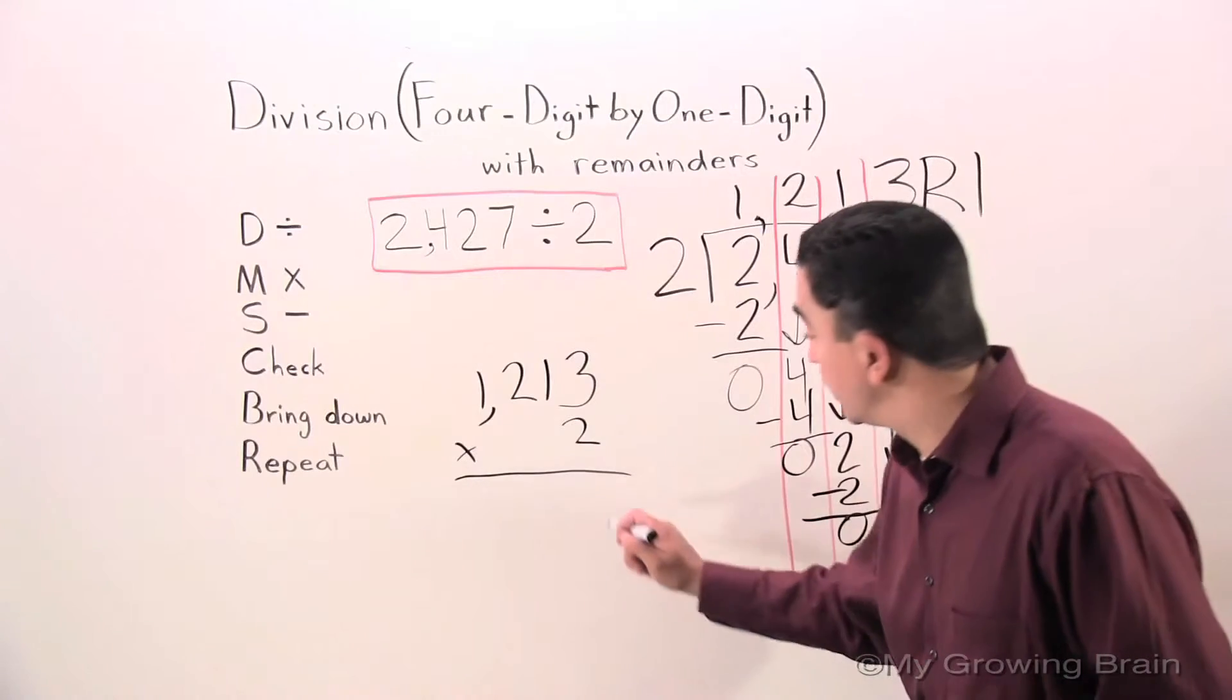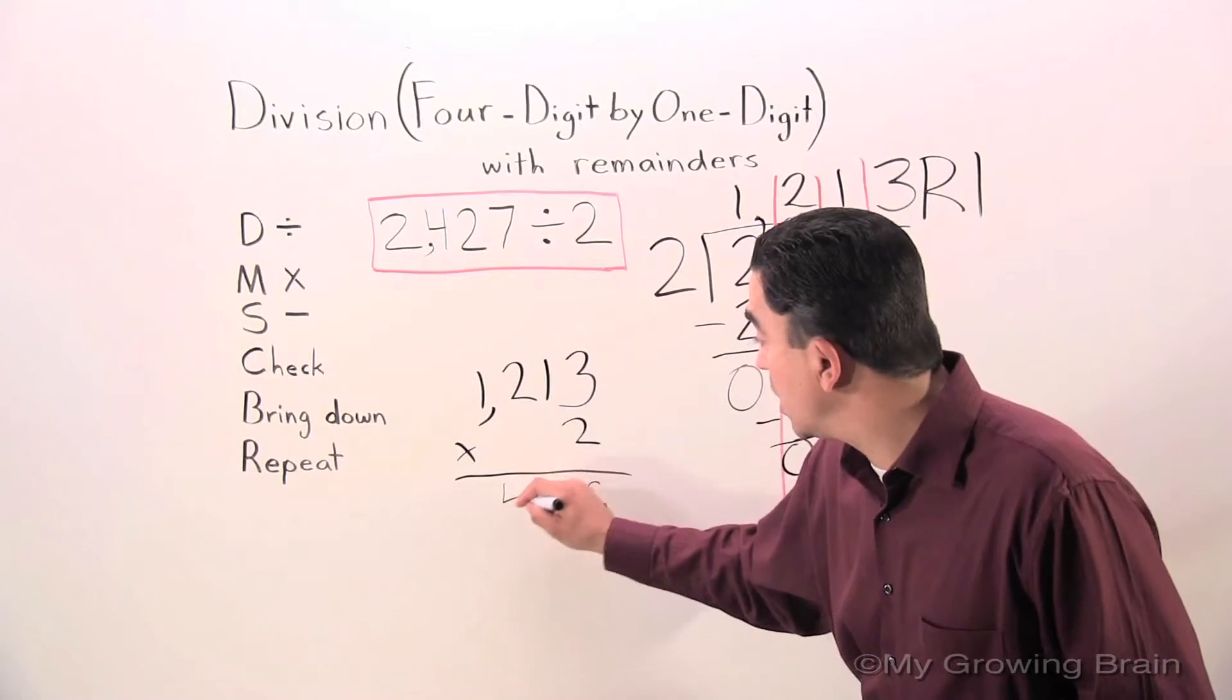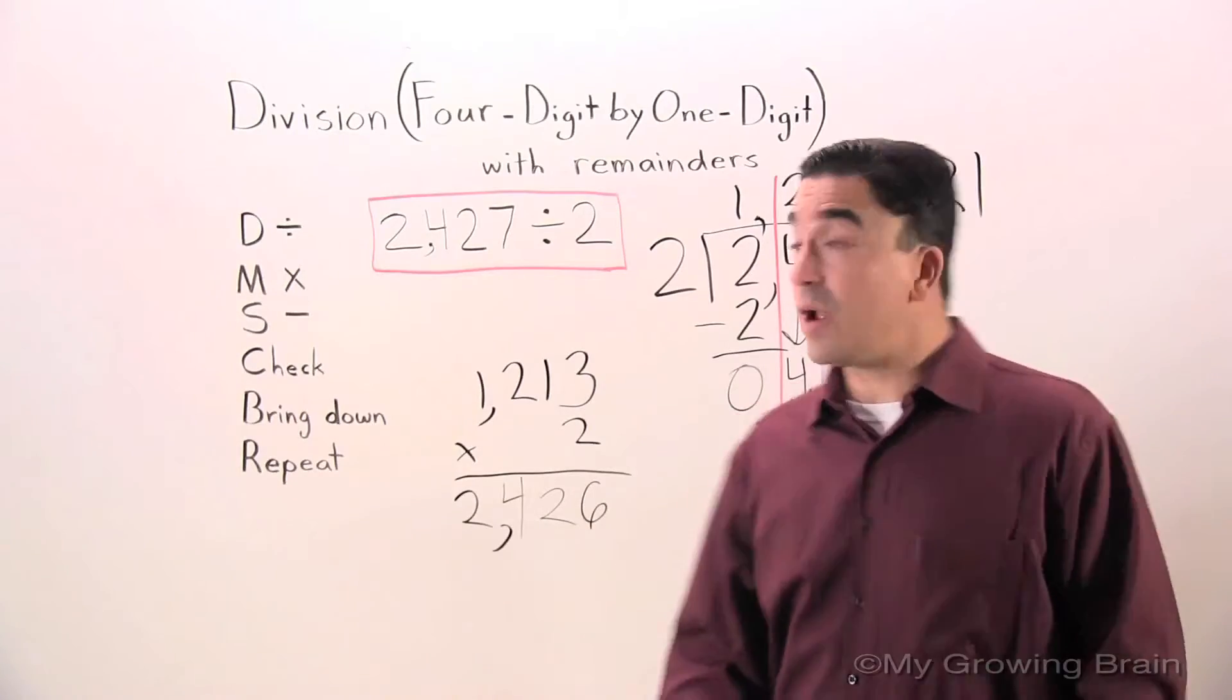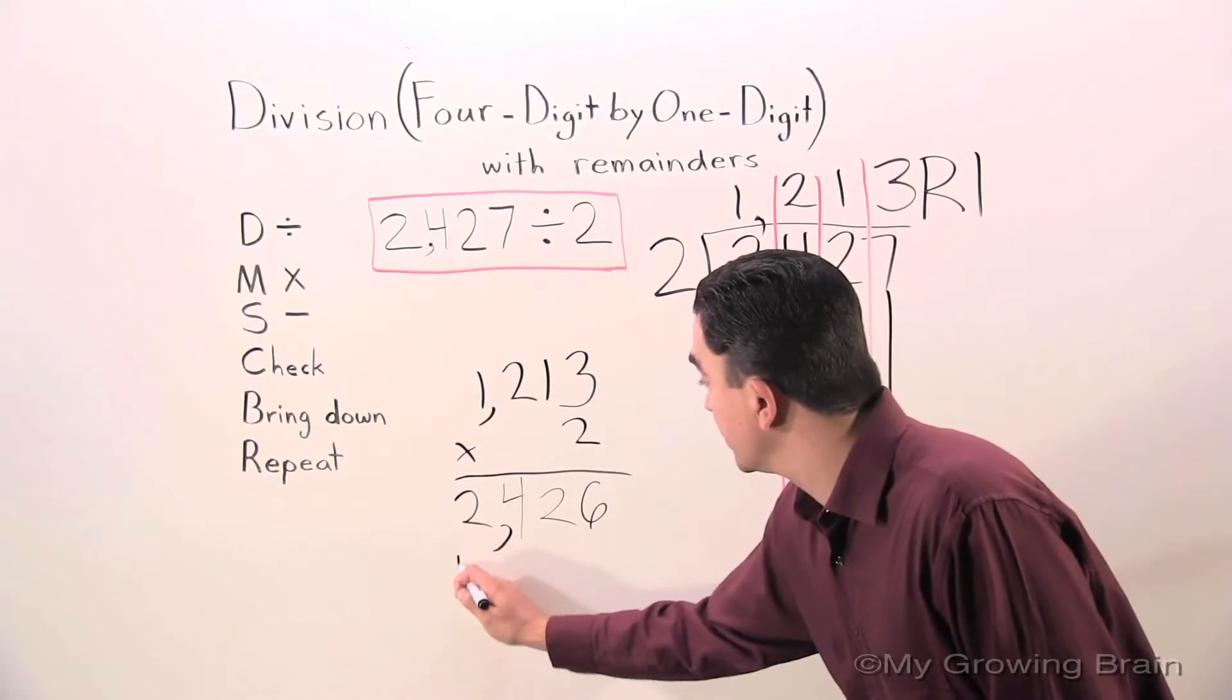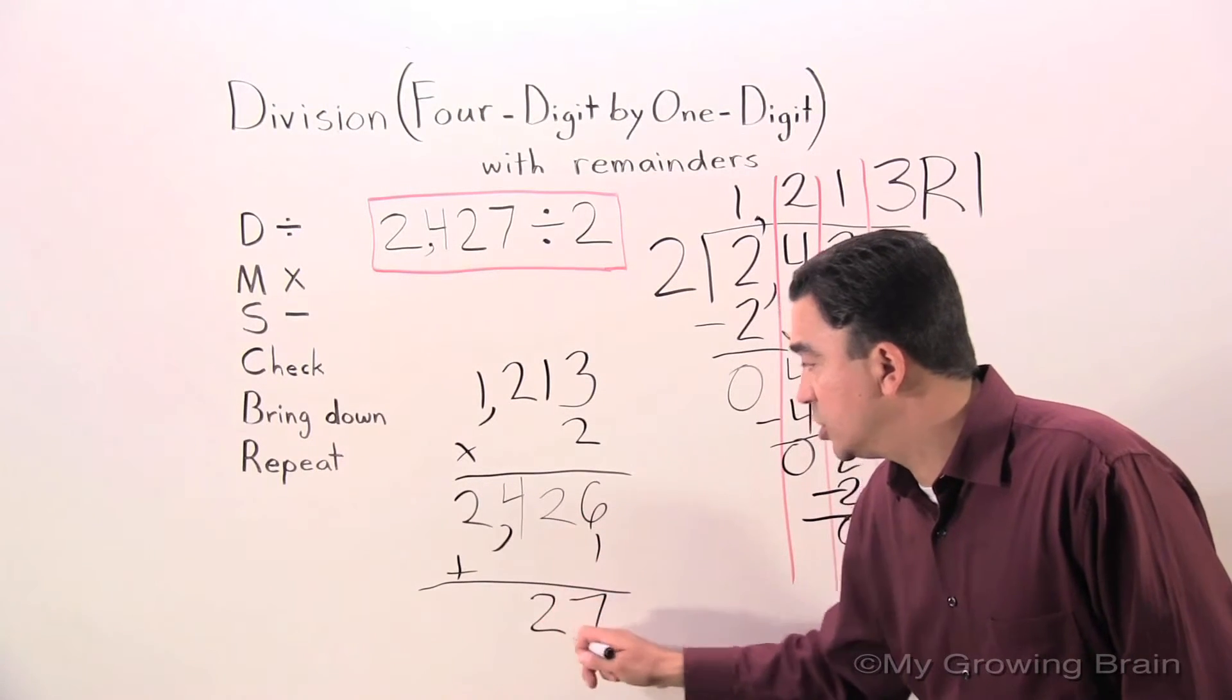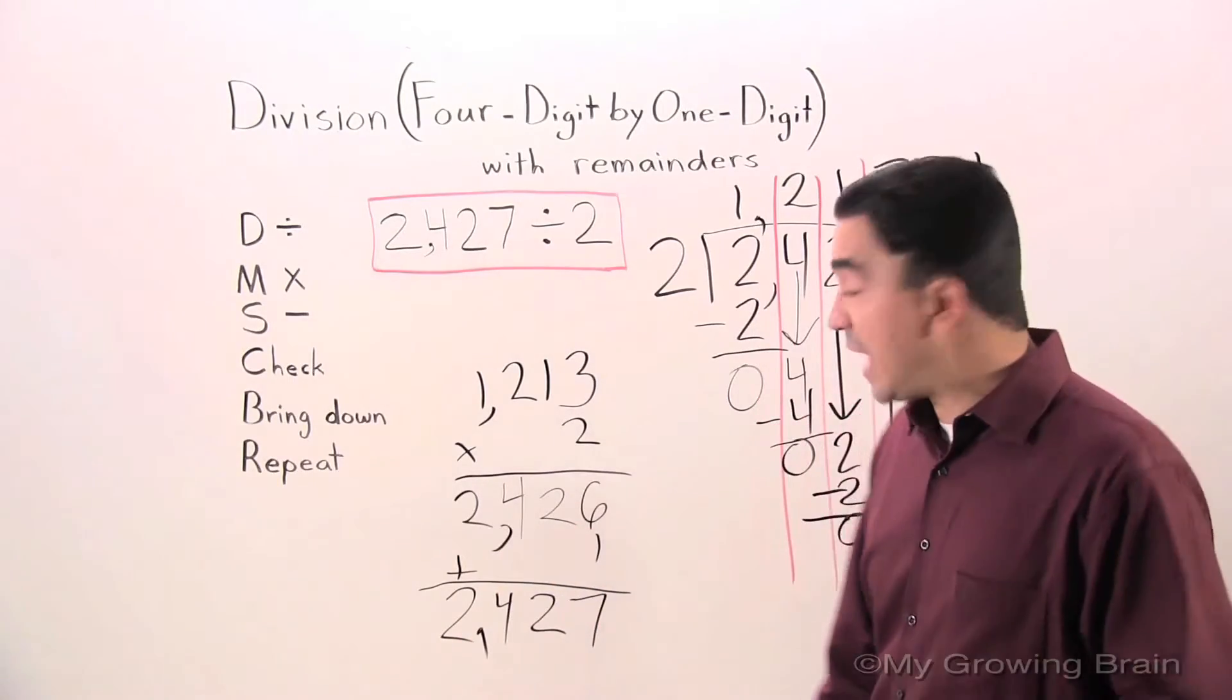2 times 3? 6. 2 times 1? 2. 2 times 2? 4. 2 times 1? 2. Now I'm going to add the remainder to my product. 6 plus 1? 7. 2 plus 0? 2. 4 plus 0? 4. 2 plus 0? 2. My answer is 2,427.